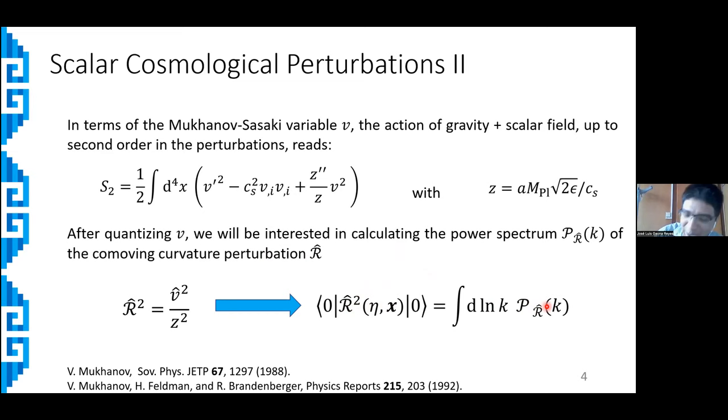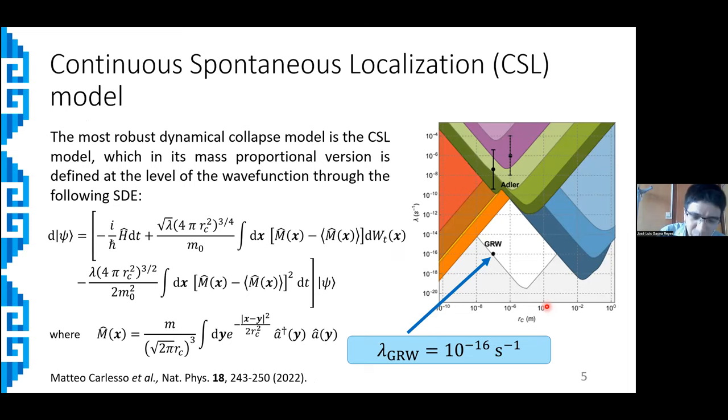So this is the cosmological aspect. On the other hand, let's talk a little bit about collapse models. In general, dynamical collapse models can be regarded as phenomenological modifications to the Schrödinger evolution, which were historically introduced to solve the measurement problem, through the addition of nonlinear and stochastic terms to the Schrödinger evolution.